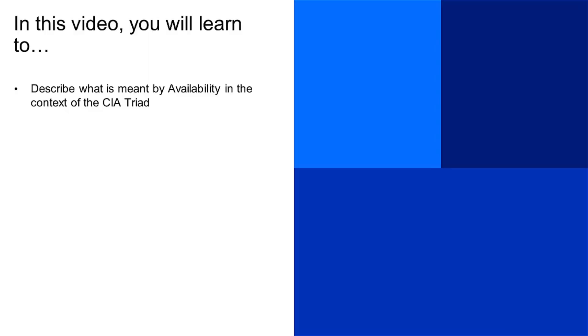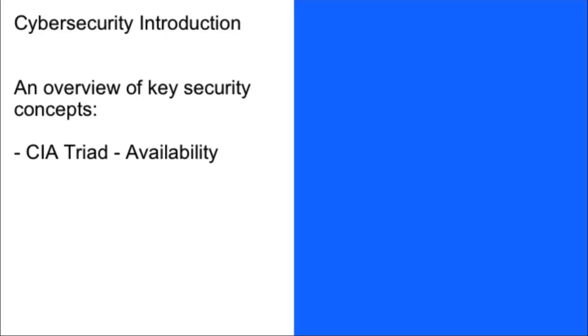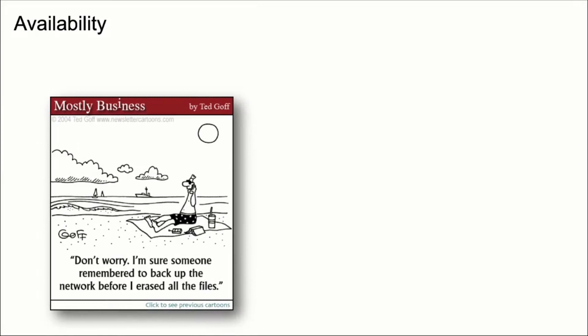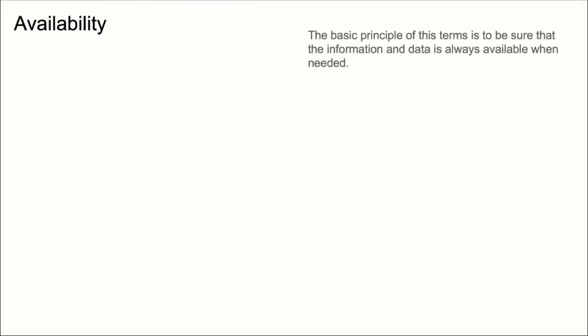In this video, you will learn to describe what is meant by availability in the context of the CIA triad. Availability means that any data should be available always when it's needed. A clear example of a lack of availability is not having any kind of backups for our data or systems. When a cyber attack occurs and ransomware encrypts or erases all the data from our computers and servers, the easiest solution is to restore from the last available backup.